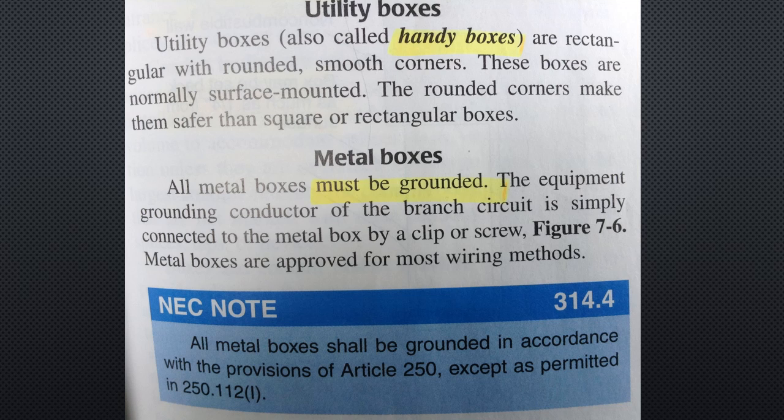Utility boxes: utility boxes, also called handy boxes, are rectangular with rounded smooth corners. These boxes are normally surface mounted. The rounded corners make them safer than square or rectangular boxes.